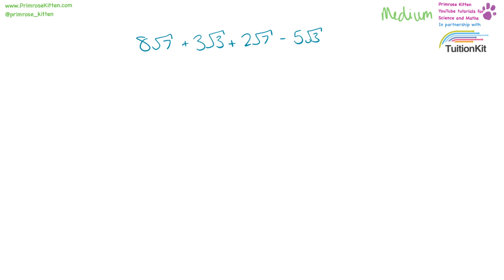8 square root 7 plus 2 square root 7 is 10 square root 7. 3 square root 3 minus 5 square root 3 is minus 2 square root 3. So the answer is 10 square root 7 minus 2 square root 3.